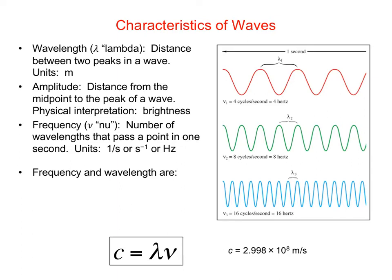The amplitude essentially tells us the height of the peaks, so we're thinking about the y-axis here. It's the distance between the midpoint of a wave and the peak. The physical interpretation of amplitude is brightness, so a wave with a higher amplitude is going to appear more bright.